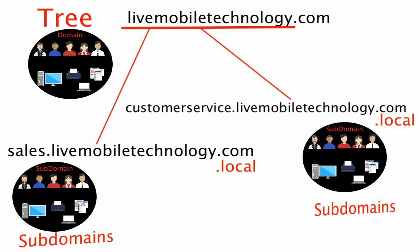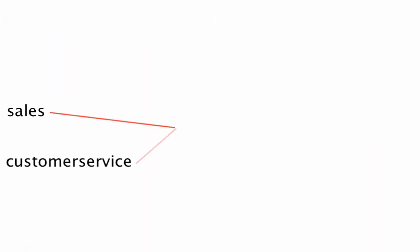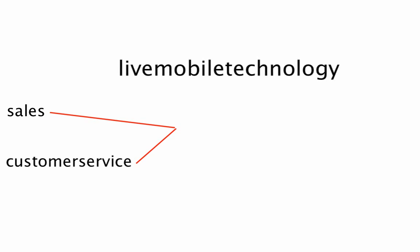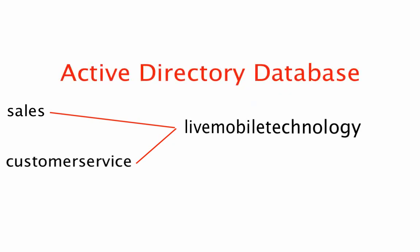Live Mobile Technology is at the top of the tree, so it is considered to be the root domain. Remember that as long as sales or customer service share the Live Mobile Technology namespace, then sales and customer service are part of the tree. Each domain has its own group of users and computers, and that means each domain has its own Active Directory database.